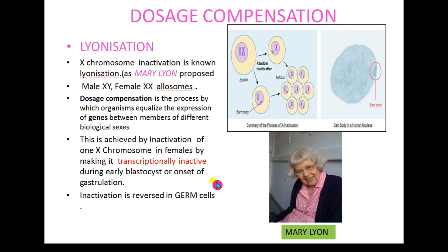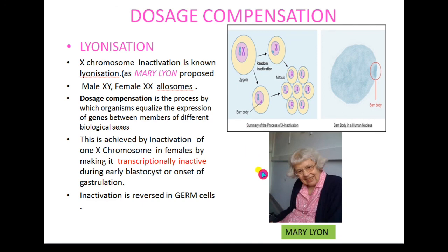That is the difference between somatic cells and germ cells. In germ cells, both X chromosomes are active, but in somatic cells one X chromosome is inactivated during early development to achieve dosage compensation. This dosage compensation was first described by Mary Lyon, which is why the inactivation process is known as lyonization. Happy studying, thank you.